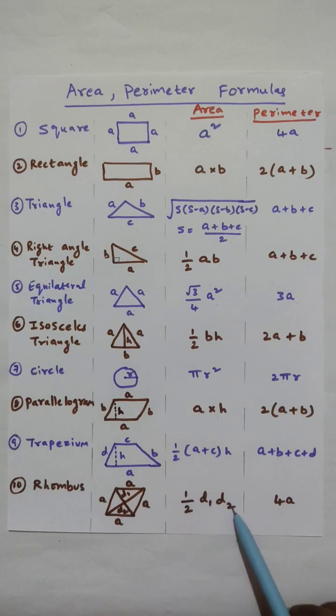And area is half D1 into D2. And perimeter is 4 into A where A is the side of a rhombus.